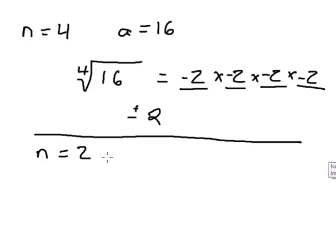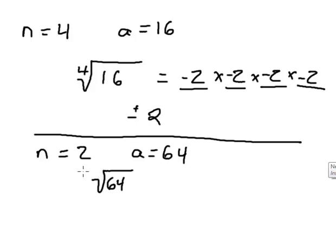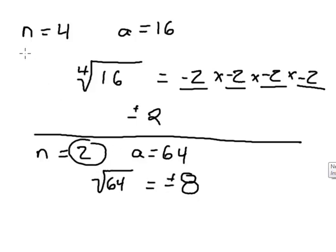Here's an easy one. Let's say n equals 2 and a equals 64. I'm looking for the square root of 64. If you don't put any number under the radical, that means it's the square root. The square root of 64 is the number that if you multiply it times itself you get 64 — that's 8. But because this is an even root, it'll be plus or minus 8.